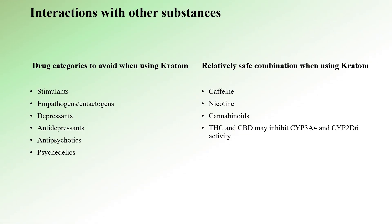Let's briefly talk about potential interactions between Kratom and other substances when used concurrently. There are certain categories of drugs that should definitely be avoided when using Kratom. These include stimulants, empathogens and entactogens, depressants, antidepressants, antipsychotics, and psychedelics. Combining Kratom with any of these can lead to metabolic interaction and potentially result in an overdose. It's worth noting that some cannabinoids found in cannabis like THC and CBD might inhibit the activity of CYP3A4 and CYP2D6 enzymes, which can affect Kratom metabolism by reducing the conversion of mitragynine to 7-hydroxymitragynine.